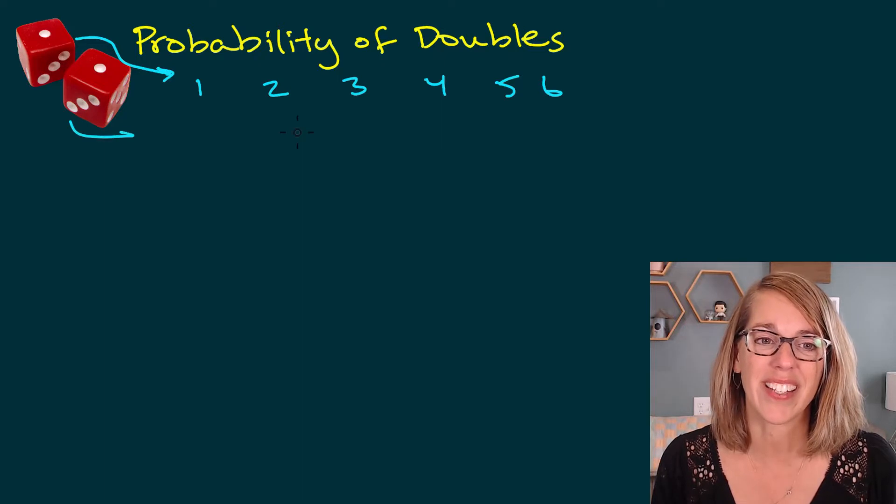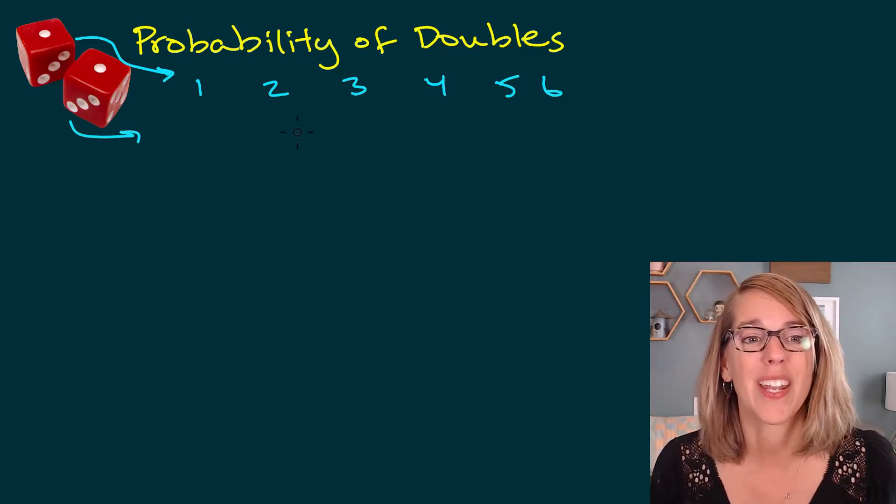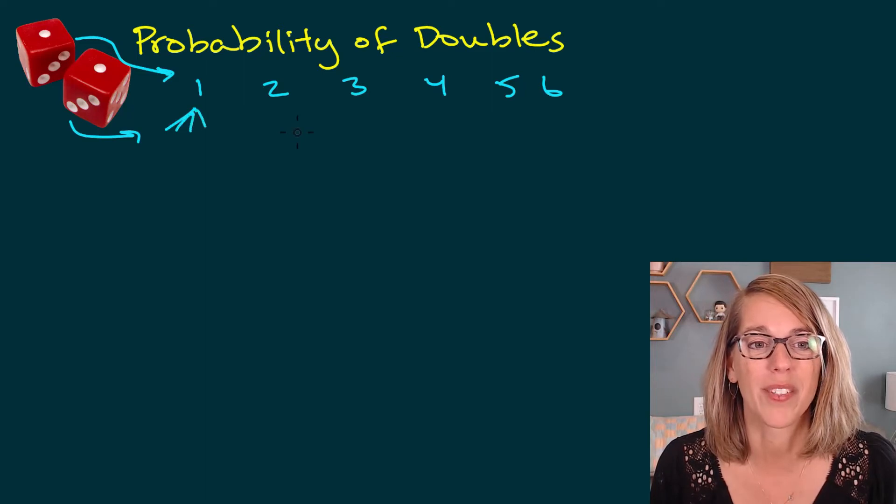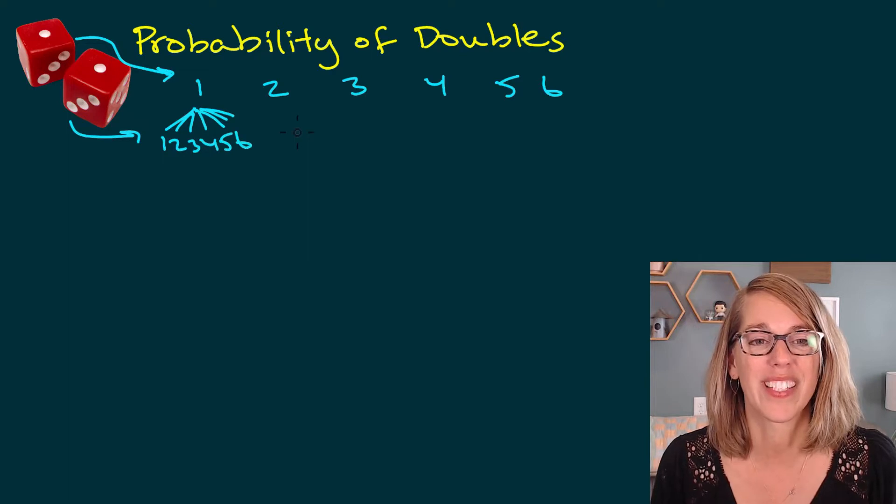For that second dice, I can also come up with any number one through six, and I'm going to pair that with what I got up above. So one, two, three, four, five, six, three, four, five, six.